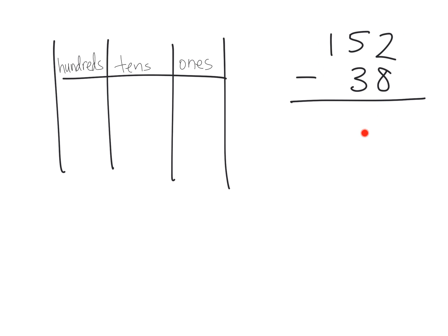We've got this problem: 152 minus 38. I'm specifically showing you borrowing because I think when we don't need borrowing, the kids have less of a struggle. So first I'm going to model 152 in place value. There's 152 — feel free to pause to make sure you understand why. It says we're supposed to subtract 38, and the idea is we're going to take away 8 ones. But you can see we cannot take away 8 ones because we only have 2 ones.